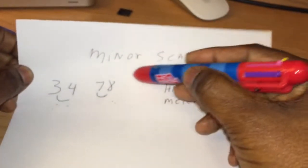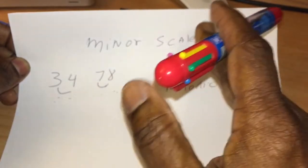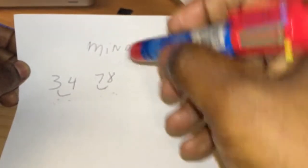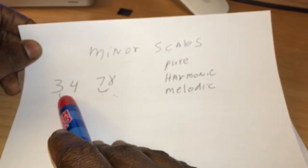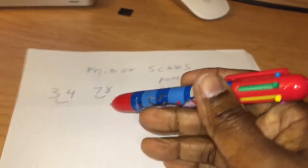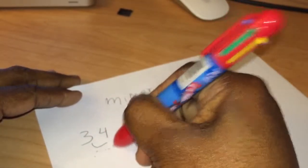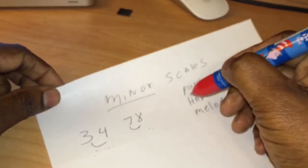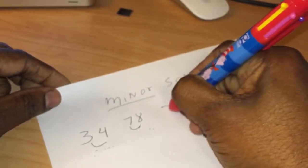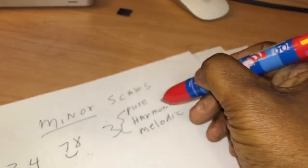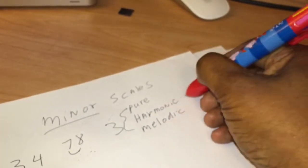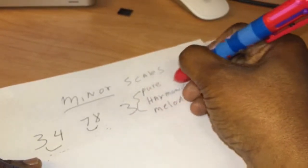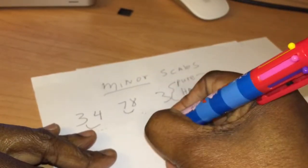Hey guys, I got some people asking me about minor scales, so here's a short video on how to make them. Before we start, we need to know some things about scales. In my last video we talked about how to make major scales, with half steps between three and four, and seven and eight. Minor scales are a little bit different, and the other problem we run into is that there are three types: the pure or natural, the harmonic, and the melodic.